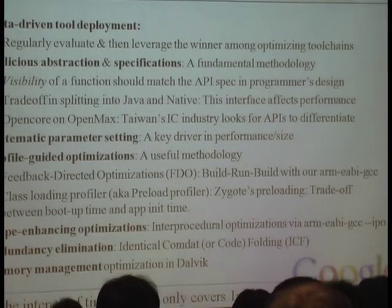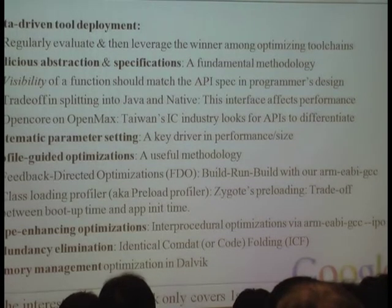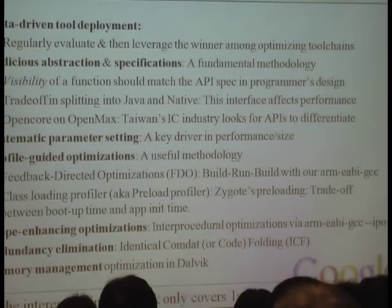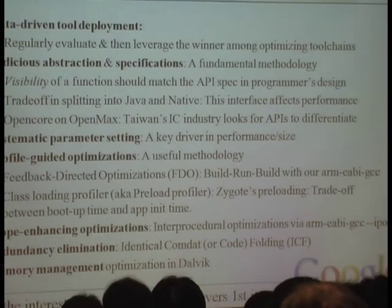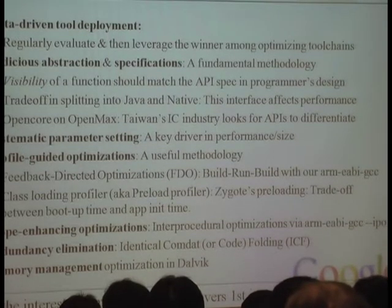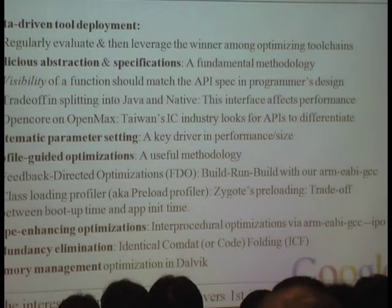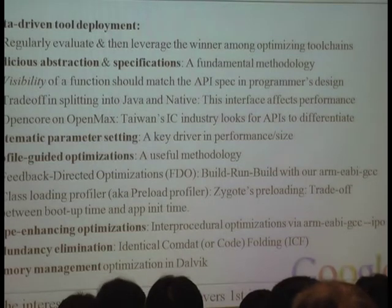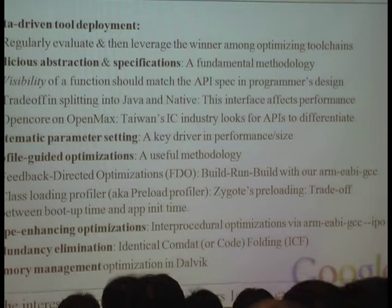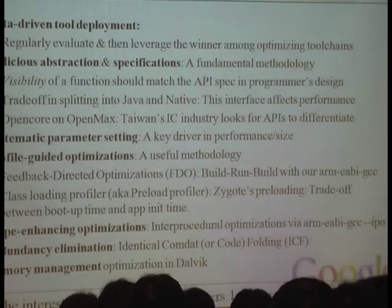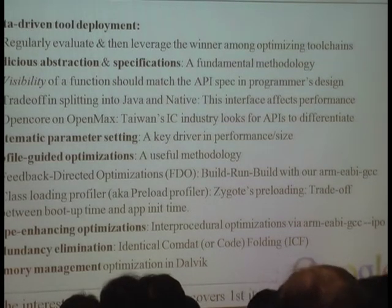We can also make trade-offs in splitting things into Java versus native. If you want C/C++ performance, you can turn things into native code and use JNI to invoke those native parts. There are trade-offs there. There's also OpenCode and OpenNext — this part is not based on OpenNext yet, but a few companies in Taiwan are interested in providing OpenNext-compatible chips so they can provide differentiating values by swapping in their newer IPs.